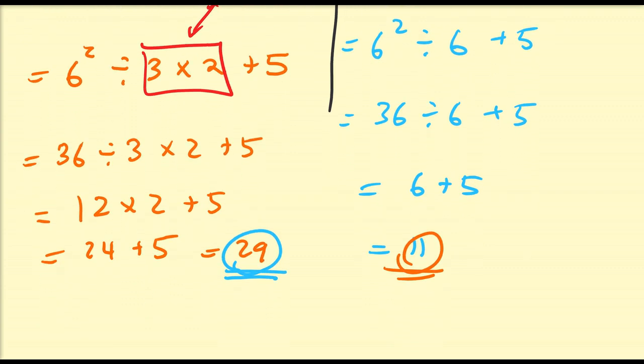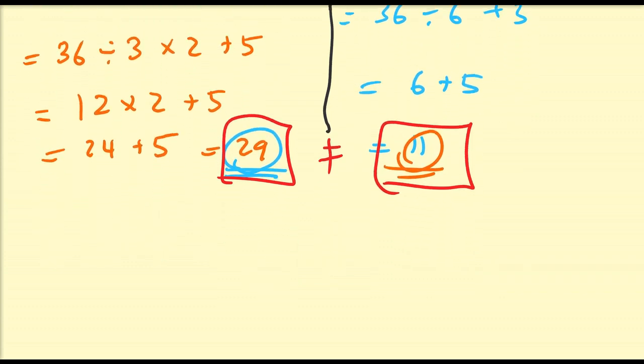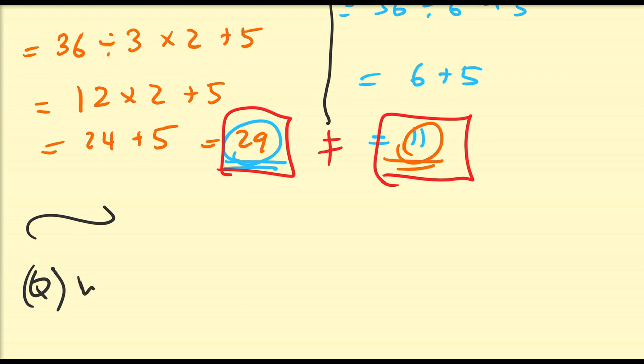So, of course, these two answers, 29 and 11, are not the same and thus creates the arguments or debates in the mathematical community. And some people will really get very sensitive and very upset if you try and argue one value over the other. Alright. So the big question is this. So which one is correct? So the answer is neither or both. It really depends.